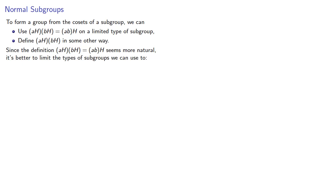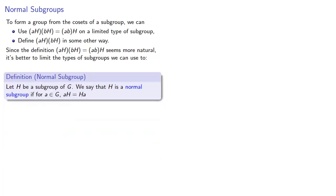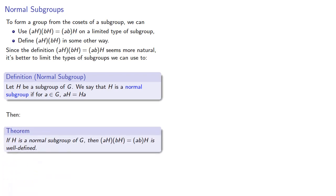And so we'll define the following. Let H be a subgroup of G. We say that H is a normal subgroup if, for any A in our group, AH equals HA. The left and right cosets are the same. And if we do that, then we have the following theorem. If H is a normal subgroup, then AH, BH equals ABH is well defined.